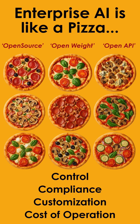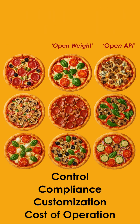Now, on top of these layers, a new set of semantics is emerging: open source, open weight, and open API. These terms define how much flexibility and control you have over each layer.